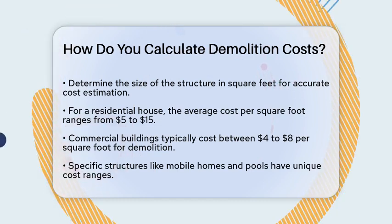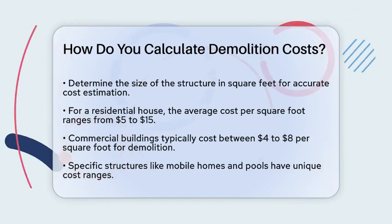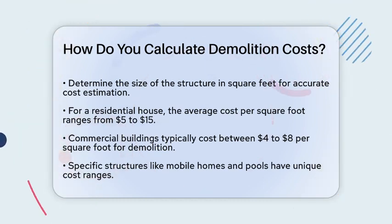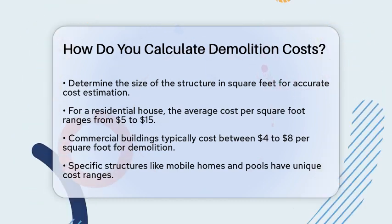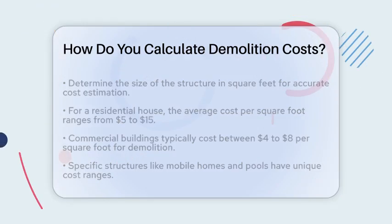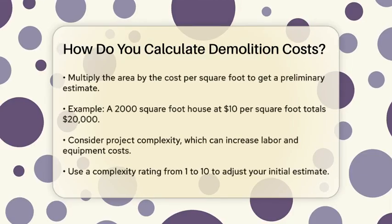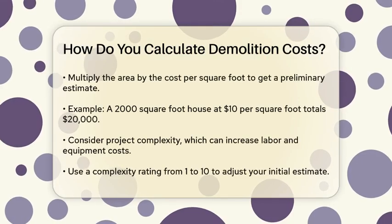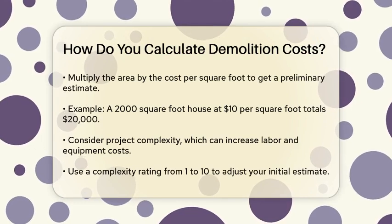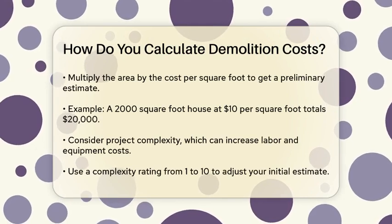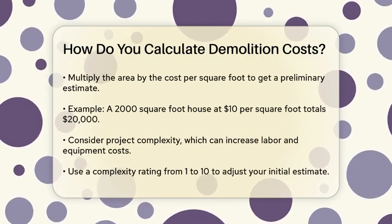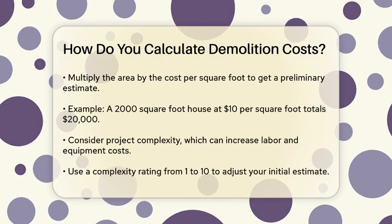Now, multiply the area of the structure by the cost per square foot. For a 2,000 square foot house with an average cost of $10 per square foot, the calculation would be: 2,000 square feet × $10 per square foot = $20,000.